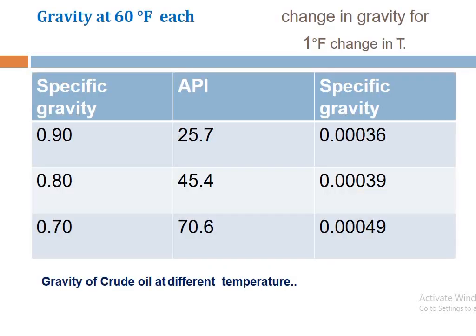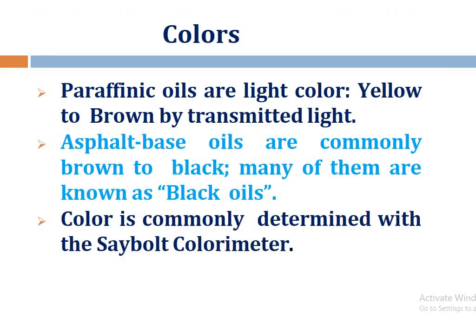Second, color: paraffinic oils are light in color — yellow to brown when viewed by transmitted light. Asphalt-based oils are commonly brown to black. Many black oils' color is commonly determined with the Saybolt colorimeter.